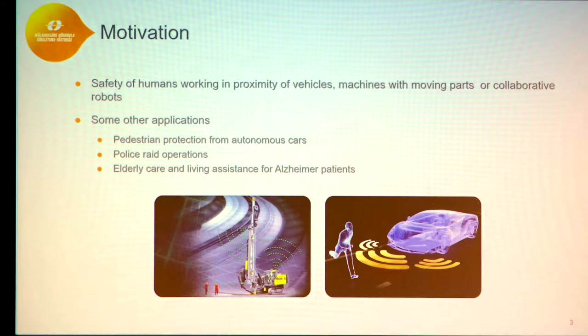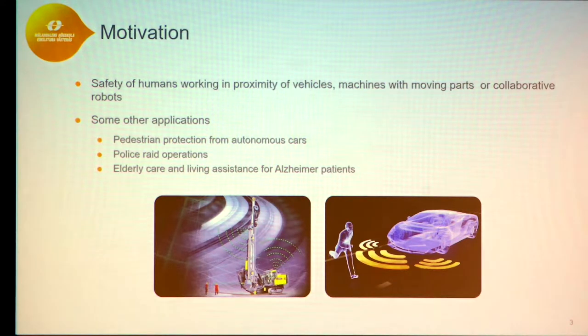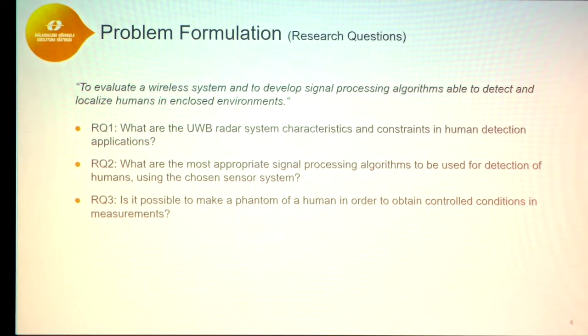In this thesis we are focusing on human detection and tracking with the Dr. Weitman radar for safety of humans working in proximity of vehicles, machines with moving parts, or collaborating robots. We have mainly focused on enclosed industrial environments where lack of light, fog, or dirt causes other technologies like cameras to have reduced functionality. There are other applications for human detection with ultra-wideband radar, for example pedestrian protection for autonomous vehicles and through-wall monitoring of humans in police raid operations.